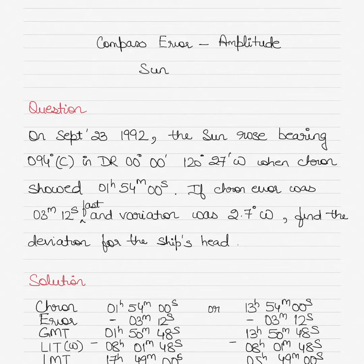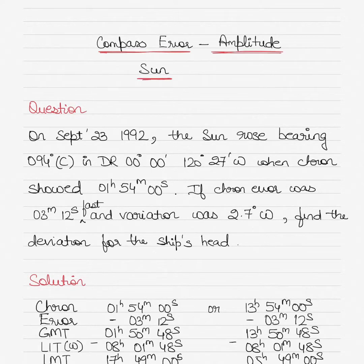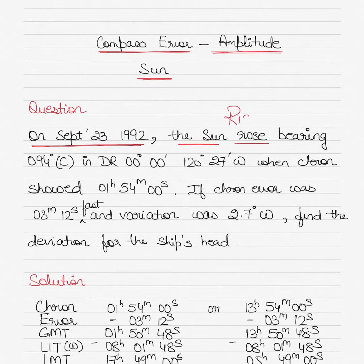Today I'll be solving a compass error question using the amplitude method, with the sun as the celestial body example. The question is dated 23rd of September 1992, and the sun was rising with a compass bearing of 094 degrees.